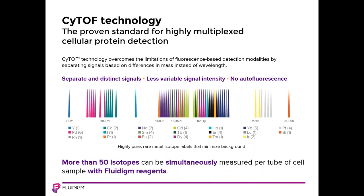Helios uses proven CyTOF technology — cytometry by time of flight — that surpasses the inherent limitations of fluorescence detection by using highly purified metal tags that are separated by mass instead of by wavelength. Metal tags have distinct signals which can be separated with one Dalton resolution, as well as less variable probe intensities. In addition, nothing analogous to autofluorescence exists when using CyTOF technology, since the metals used as probes don't exist naturally in biological systems. These characteristics of metal probes provide a solution to current challenges in high-parameter cytometry.